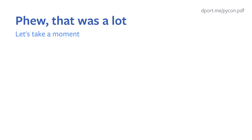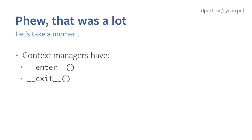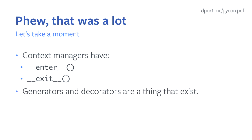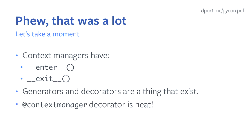So what have we learned? Context managers have enter and exit methods for the class-based approach, and init is optional. Generators and decorators exist, and using them together we can use the contextmanager decorator to easily turn a generator function into a context manager. If you're overwhelmed, that's fine. If you're hungry for more, Graham Dumpleton has a talk about complex use cases for decorators and context managers tomorrow morning.